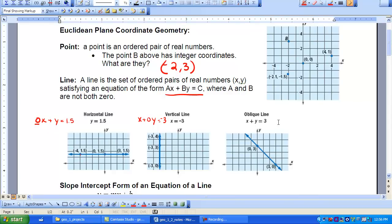Then we have the oblique line. That's where we have a value for both A and B. In this case, it happens to be 1. 1X plus 1Y equals 3. So we can take any of these points and insert them into the equation, and it will satisfy. Zero in place of X. Three in place of Y. So zero plus three equals three.